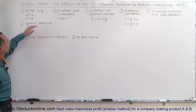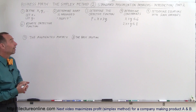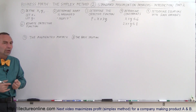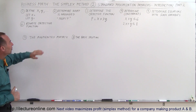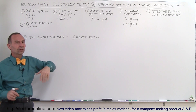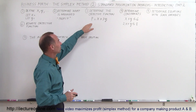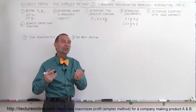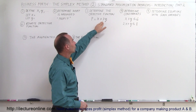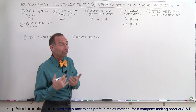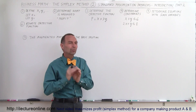The first thing you want to do is define your variables — let x equal and let y equal, maybe the quantity produced or sold. Then determine what's being maximized; here we're trying to maximize profit. The third step is to determine the objective function, which in this case is given to us: profit equals x plus 3y. We need to find the values of x and y to maximize that profit.